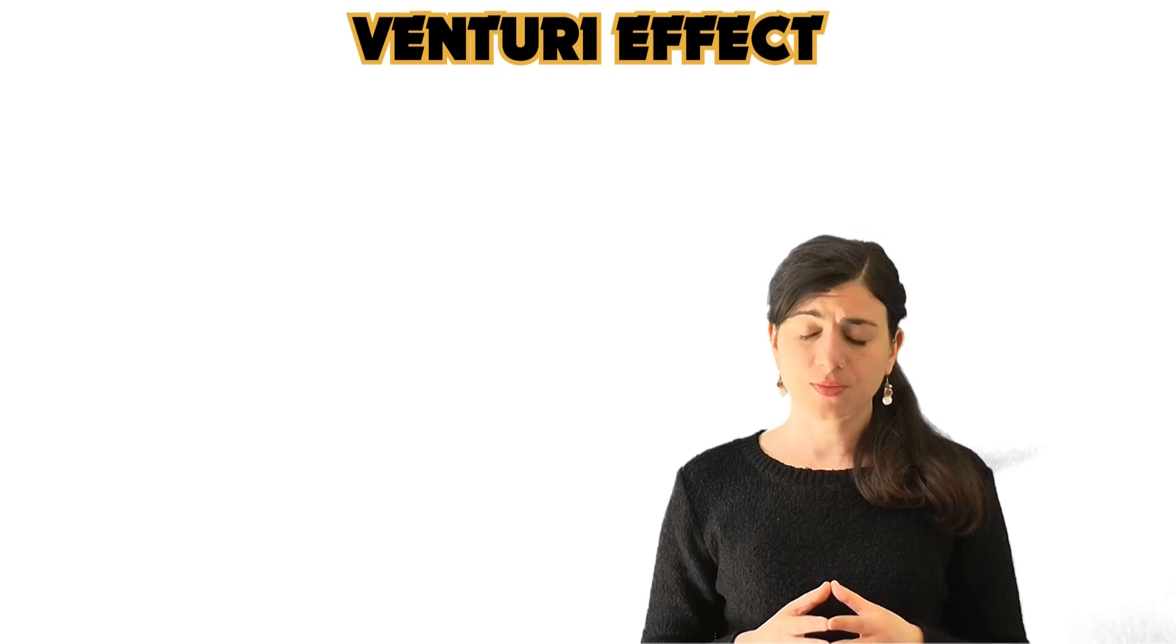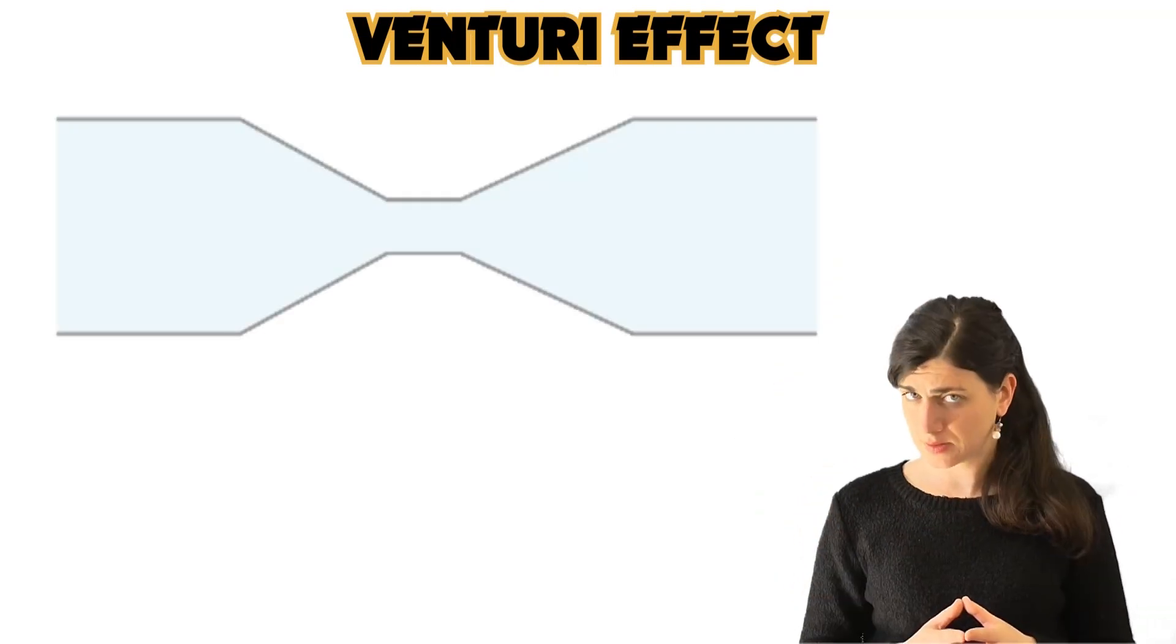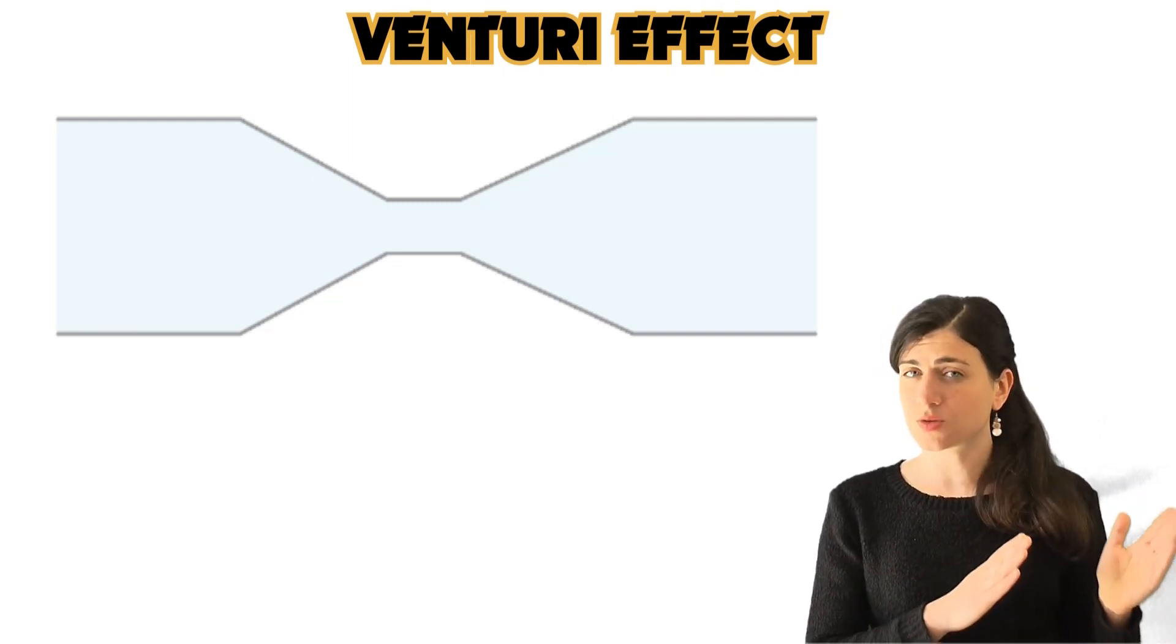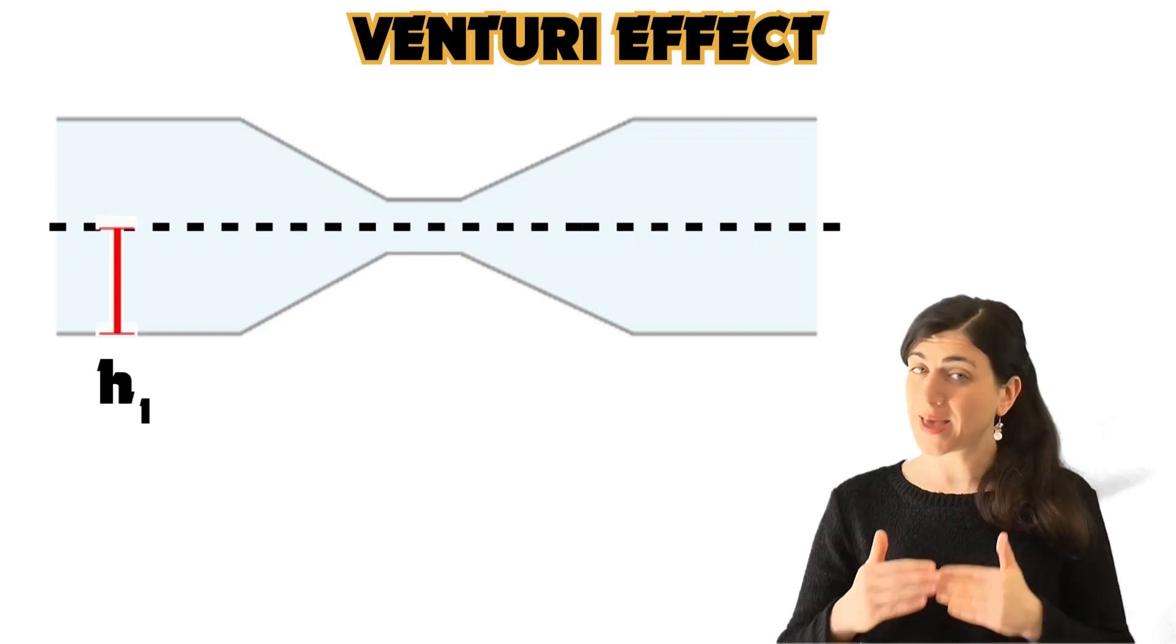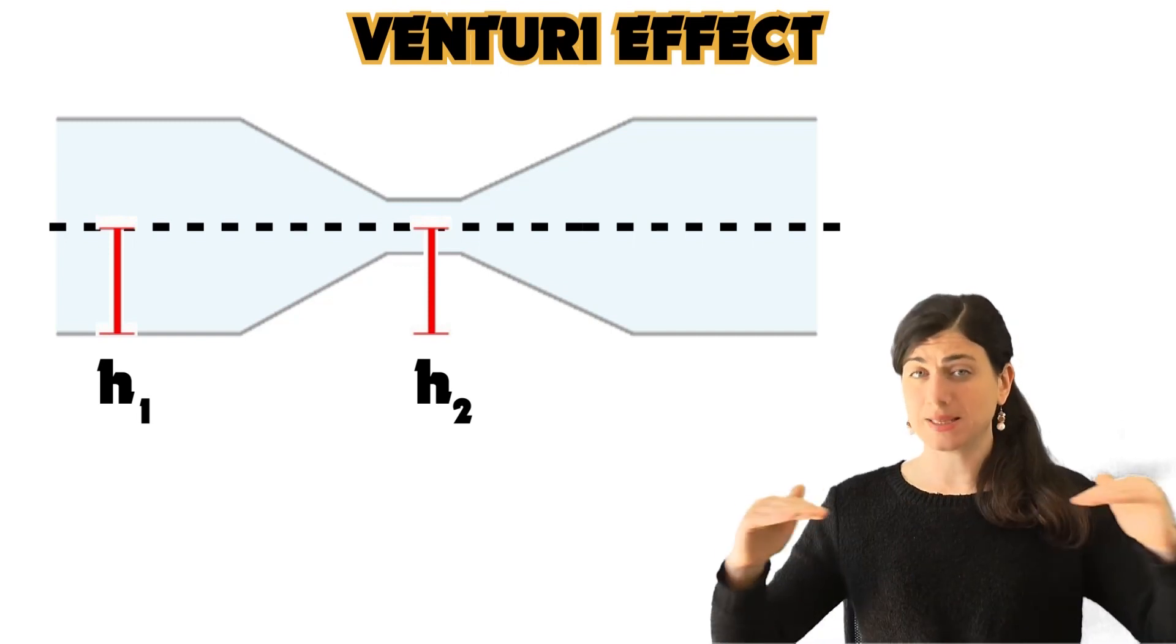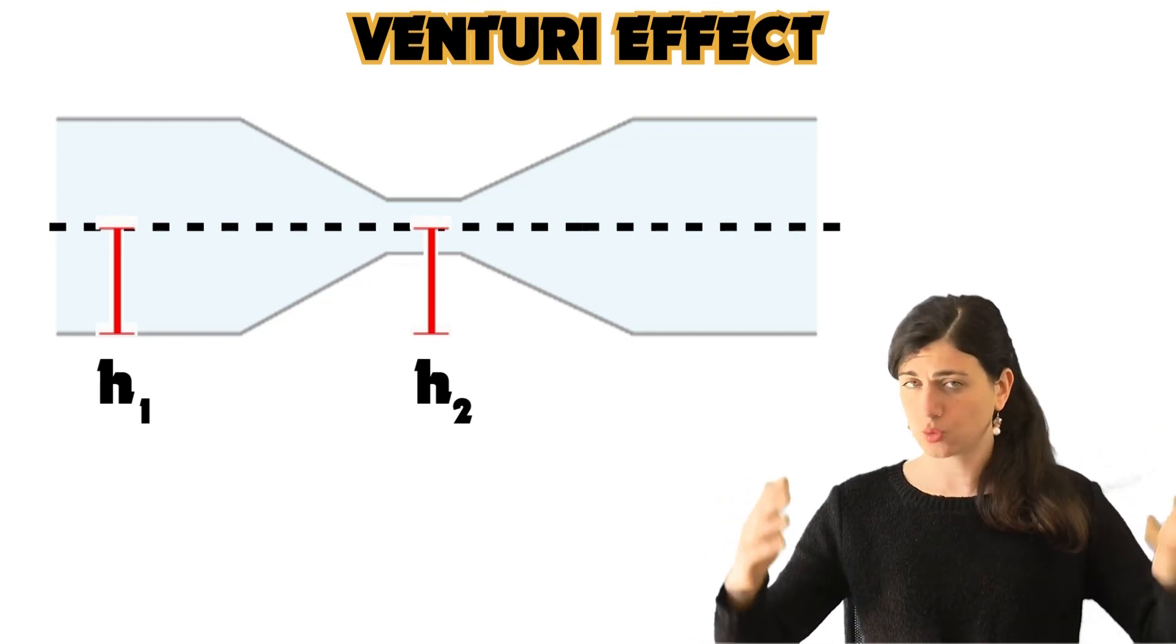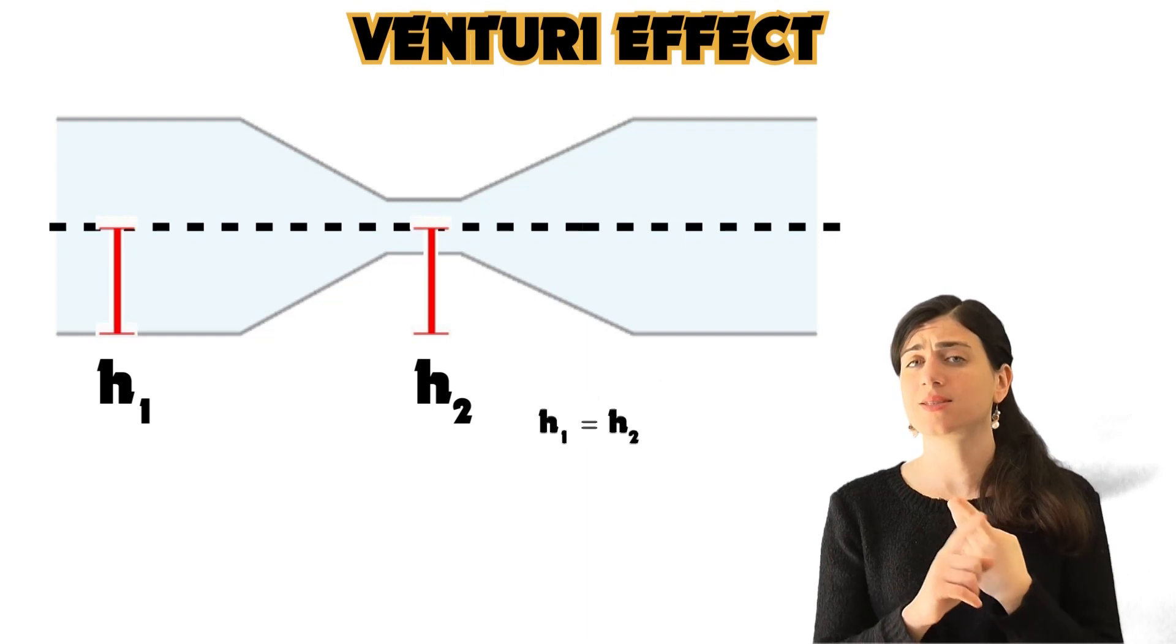This effect tells us that if we have a pipe with a narrowing inside it and with the condition that the height at the entrance of this tube is the same as the height in the narrowing, in this case we are talking about the heights relative to the base. So we can also say relative to the ground, to be clear. So if we have these two conditions, narrowing and the same height...